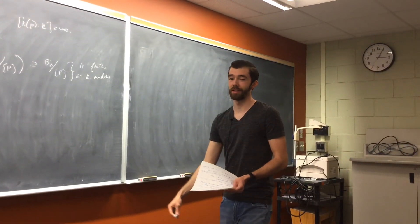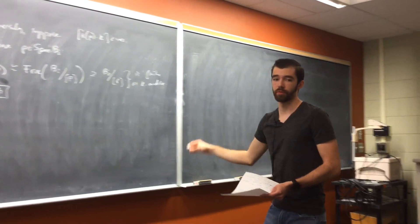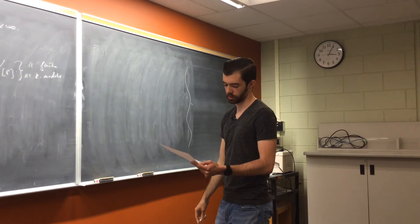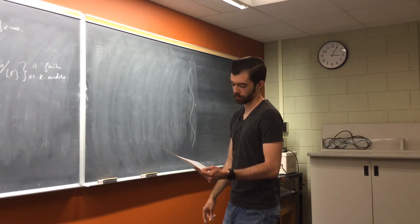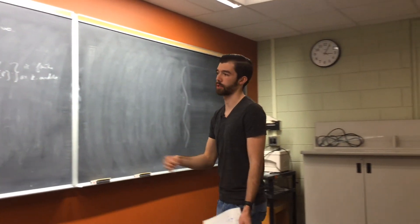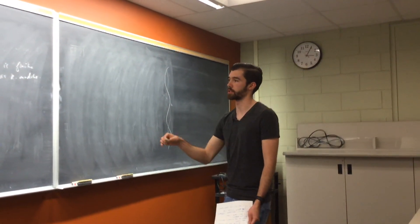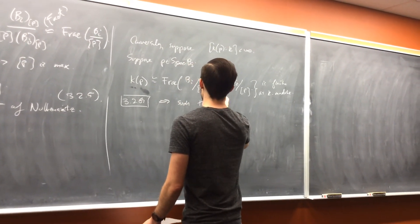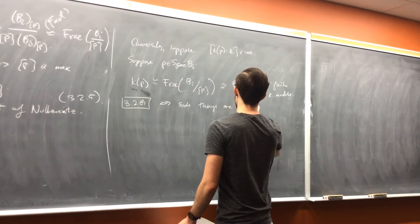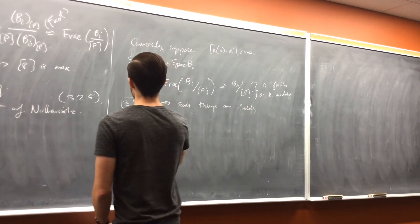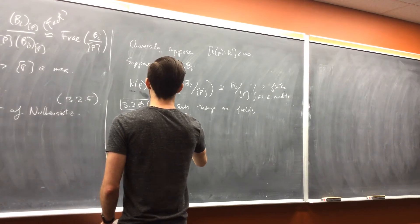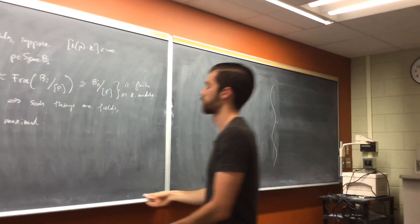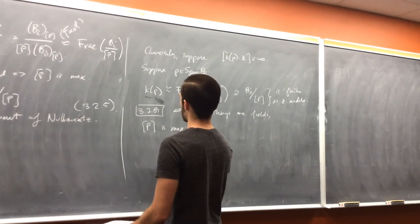There's an exercise that says: if you have an integral domain which is finite as a k-module, then it's actually a field. So if we have an integral domain that's finite dimensional as a k-vector space, it's necessarily a field. Such things are fields — i.e., [p] is maximal.